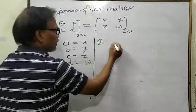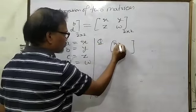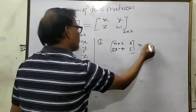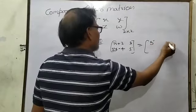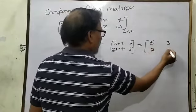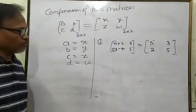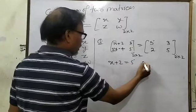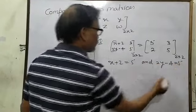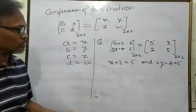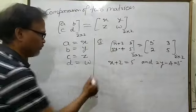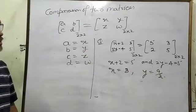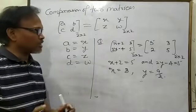For example, if the question says find the values of X and Y, and you are given [X+2, 3; Y−4, 5] equals [5, 3; 2, 5], then you can compare because the orders are equal. X+2 equals 5, and Y−4 equals 2. The elements 3 and 5 are already equal so no need to compare those. Then X equals 5 minus 2, which is 3, and Y equals 9 divided by 2. This is the comparison method used in the first exercise of matrix.